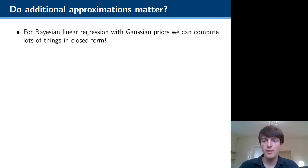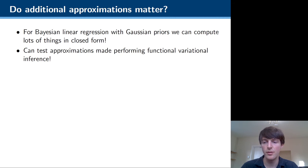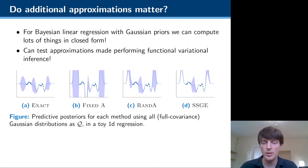So the second part of our work was looking at how implicit inference and the modified objective function affect functional variational inference in cases when things are well defined. So we really zoom in on the case of Bayesian linear regression with Gaussian priors for that. And that's just because then we can compute lots of things in closed form. So we can do exact Bayesian linear regression, which is going to be the same in weight and function space.